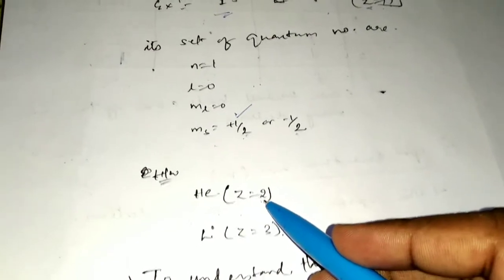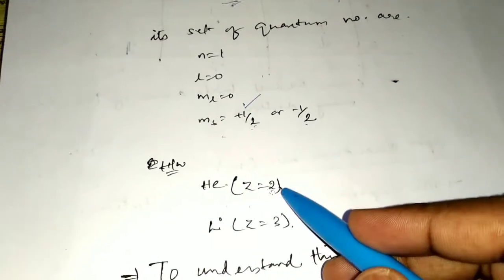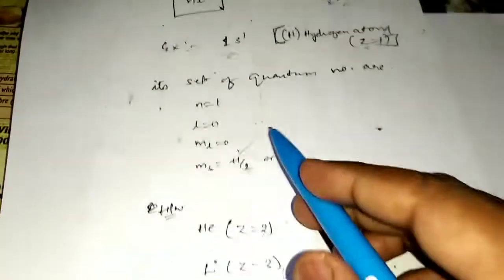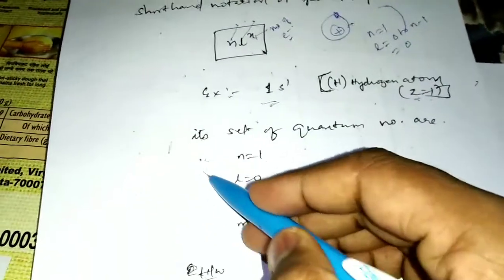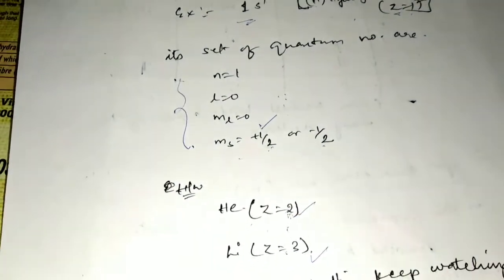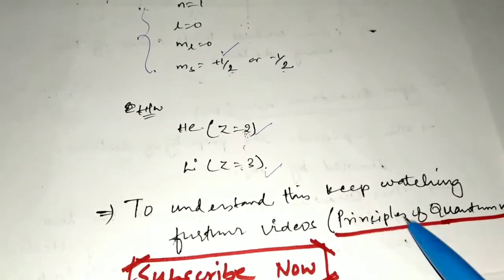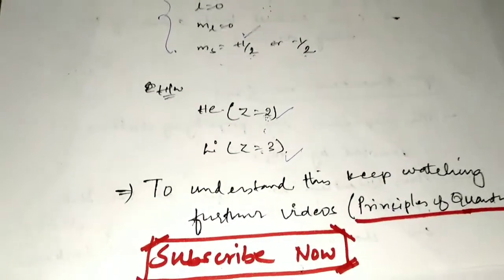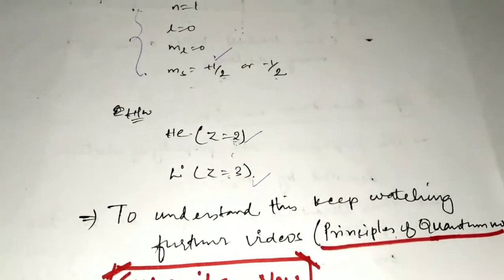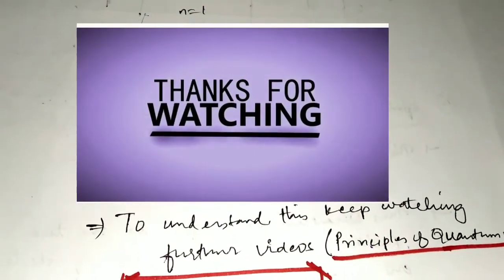Your homework is to find the quantum numbers for elements with Z=2 and Z=3, and represent their electronic configurations. In the next video, I will explain the principles of quantum numbers. Do subscribe to the channel if you are new, and keep watching. Thank you.